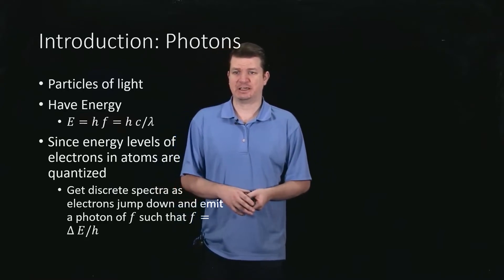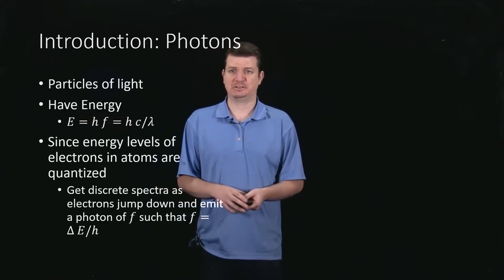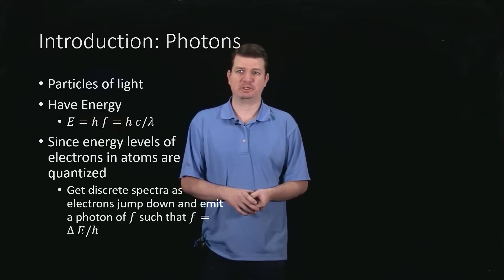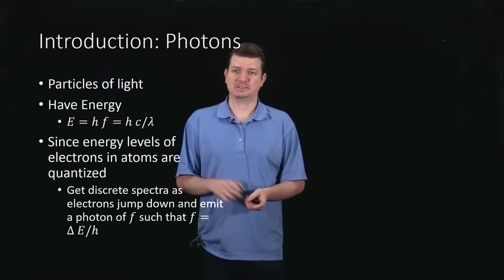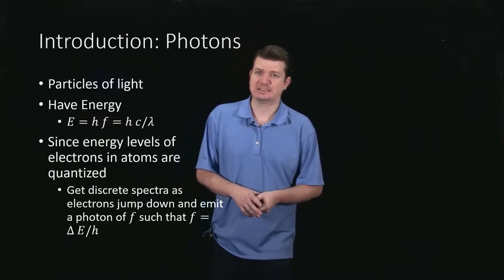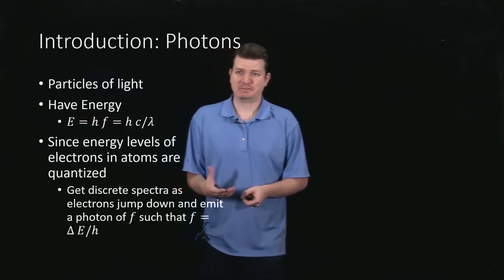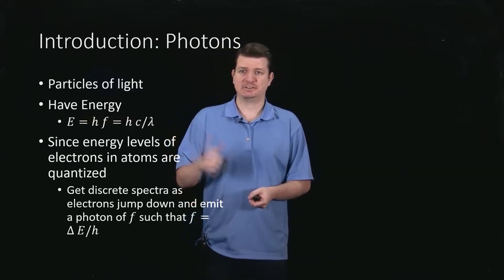those electrons have these very particular energy levels in which they orbit, and so there are certain energies that you can transition between. And if you have certain energies, then according to this you get certain frequencies.